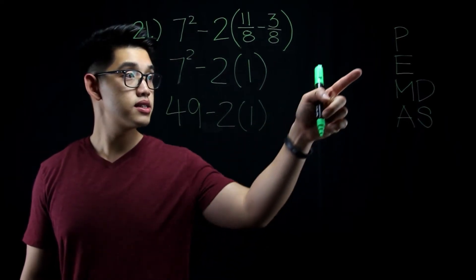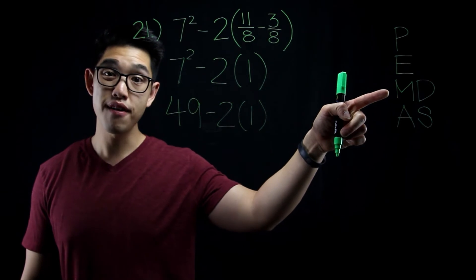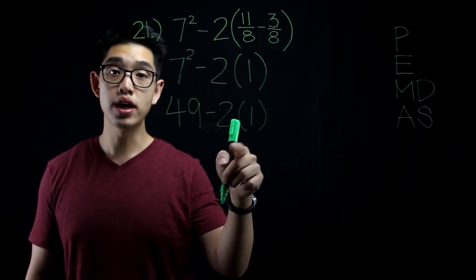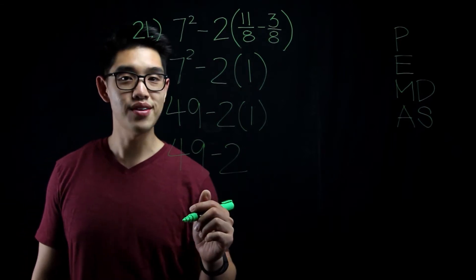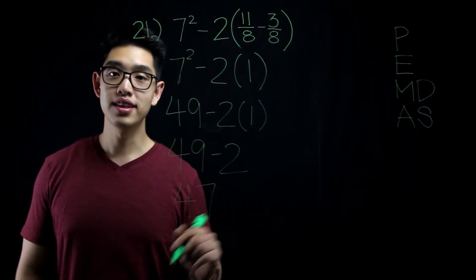Before I subtract, I need to see that I need to multiply first. So 2 times 1 equals 2. 49 minus 2 is 47. And there we have it. That's our answer.